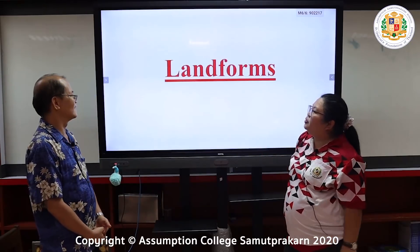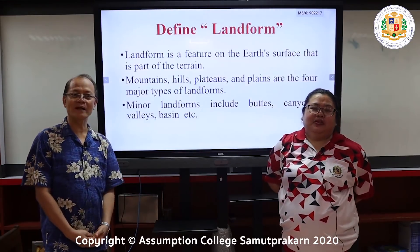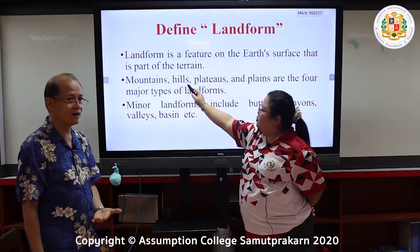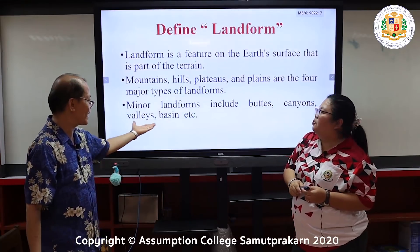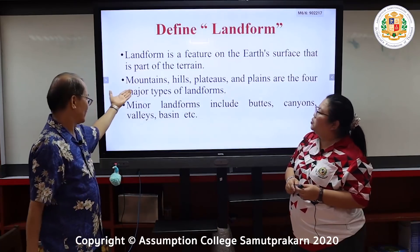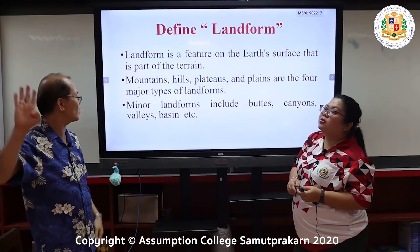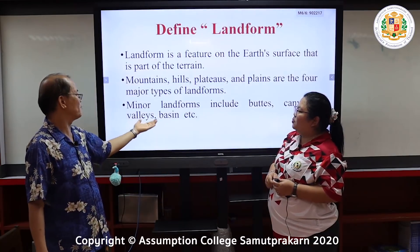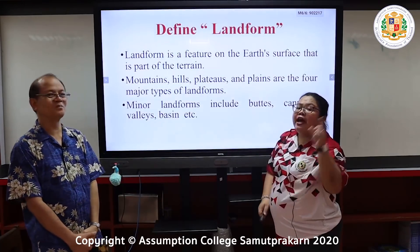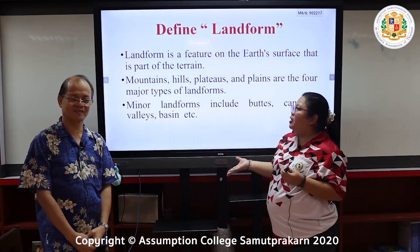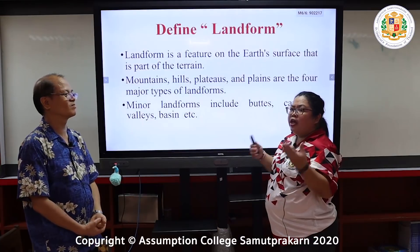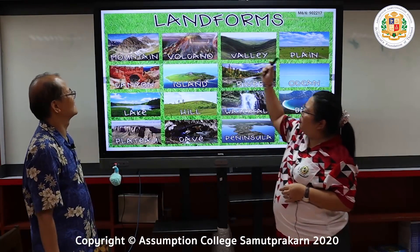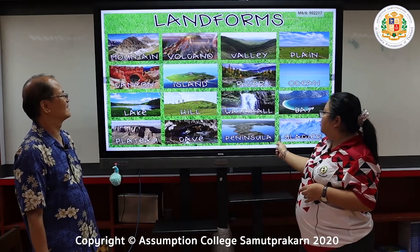Next slide — landform. We are going to define what landforms are. A landform is a feature on the earth's surface that is a part of the terrain. There are two types of landforms: the major landforms and the minor landforms. The major landforms are mountains, hills, plateaus, and plains. Minor landforms include buttes, canyons, valleys, basins, and more. There are many landforms — for example, mountain, volcano, waterfall, bay, peninsula, and many others.